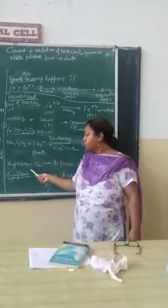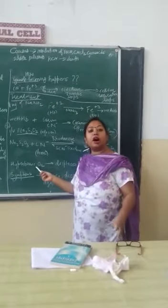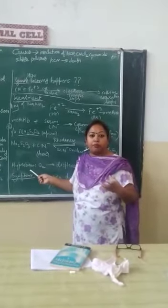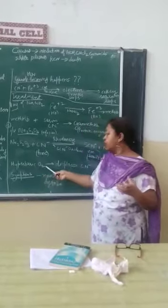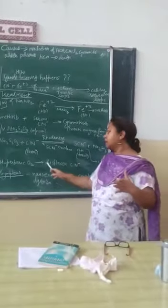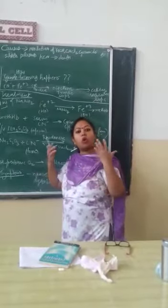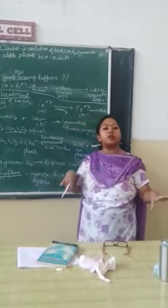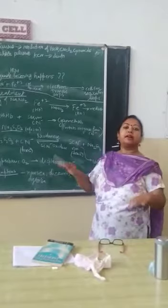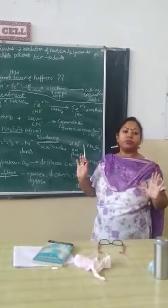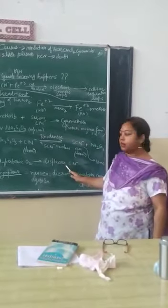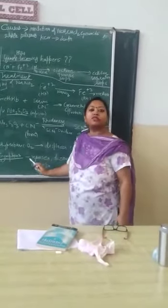The second treatment which can be given is hyperbaric oxygen. Hyper means in excess amount, and baric refers to units of pressure. So we give oxygen at high pressure in the body, so that this high-pressure oxygen will displace all the cyanide ions and replace them with oxygen — eliminating all cyanide ions from the body. This is the main treatment pattern for cyanide poisoning. Thank you so much for listening.